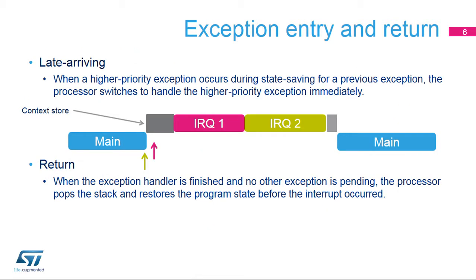When an interrupt arrives, the processor first saves the program context before executing the interrupt handler. If the processor is performing this context saving operation when an interrupt of higher priority arrives, the processor switches directly to handling the higher priority interrupt when it finishes saving the program context. When all exception handlers have been run and no other exception is pending, the processor restores the previous context from the stack and returns to normal application execution.